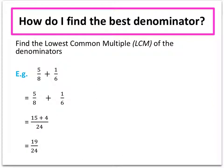So how do we find the best denominator to choose? What we want to be doing is finding the lowest common multiple (LCM) of the two denominators that we have. So we can start by listing the multiples. So if we're listing the multiples of 8, we have 8, 16, 24, 32 and so on.